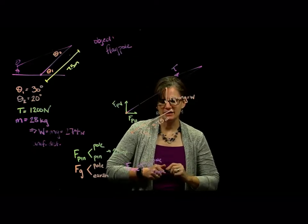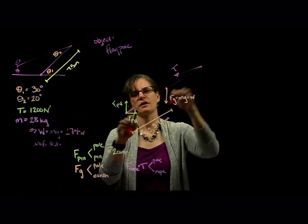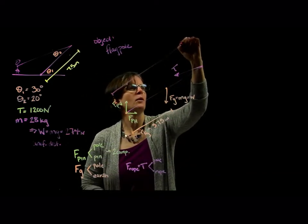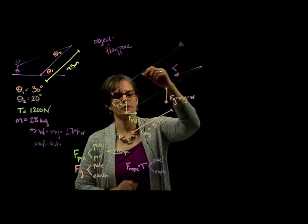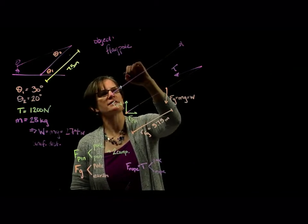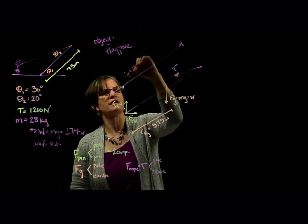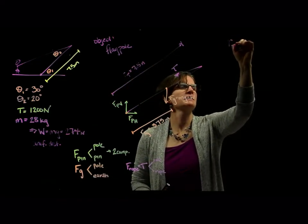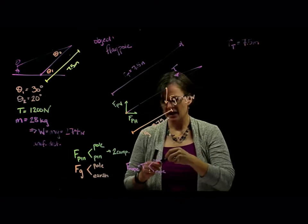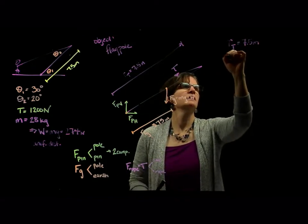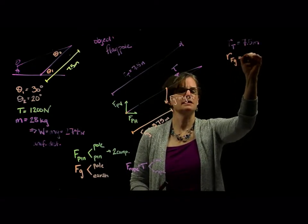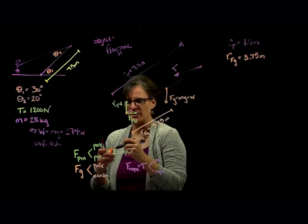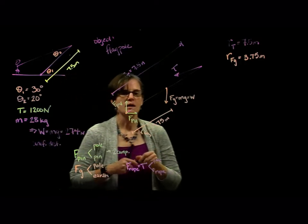The radius of the force of gravity is 3.75 meters. All right, what about the radius for the tension? Well, it's acting along the entire pole, or for the entire pole, not acting along it, but the radius of the tension is equal to 7.5 meters. So my r sub t is equal to 7.5 meters. And my radius of the force of gravity is equal to 3.75 meters. So whether you write it or identify it on here, it doesn't matter to me.